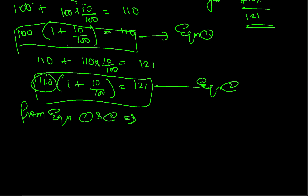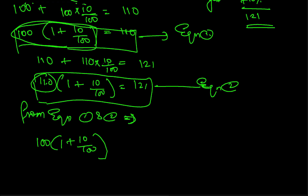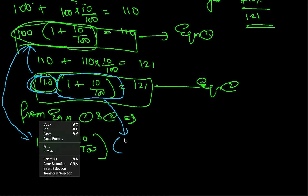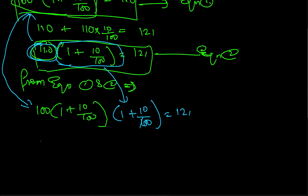From Equations 1 and 2, I can say: 100 into 1 plus 10 by 100 is equal to 110. So I will substitute this 110 into Equation 2, giving 100 into 1 plus 10 by 100, and this is applied twice — to the power 2 — equal to 121.